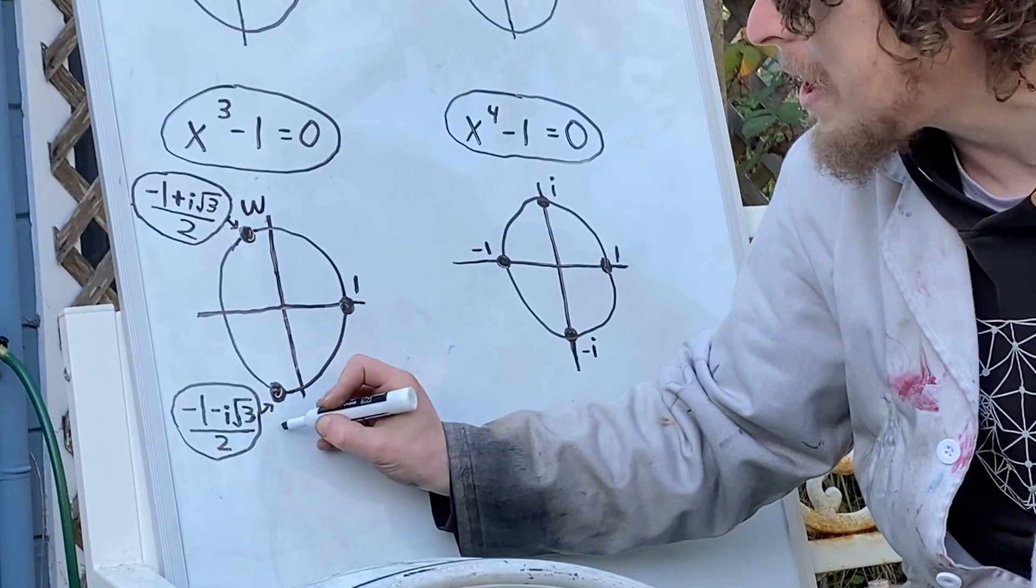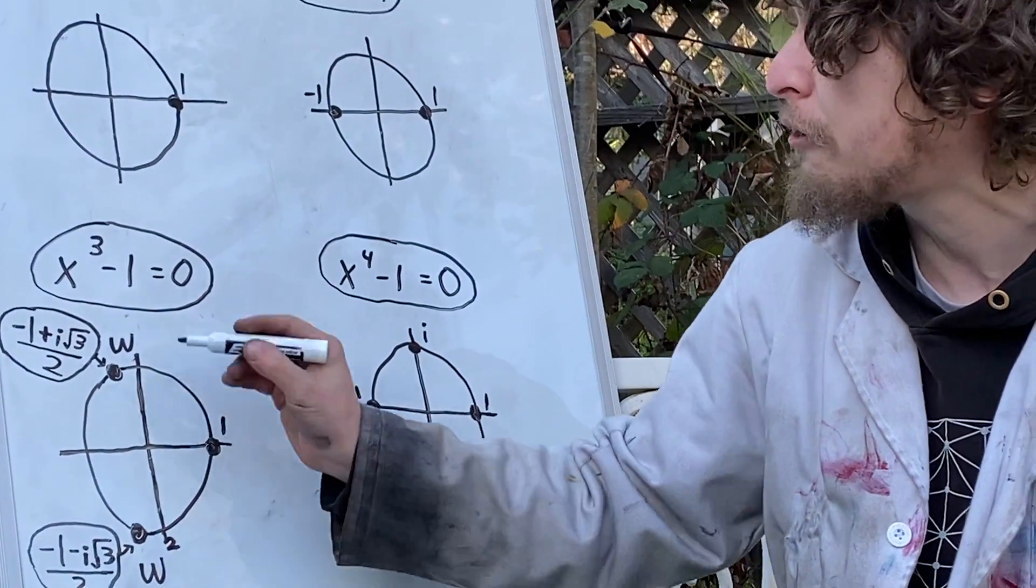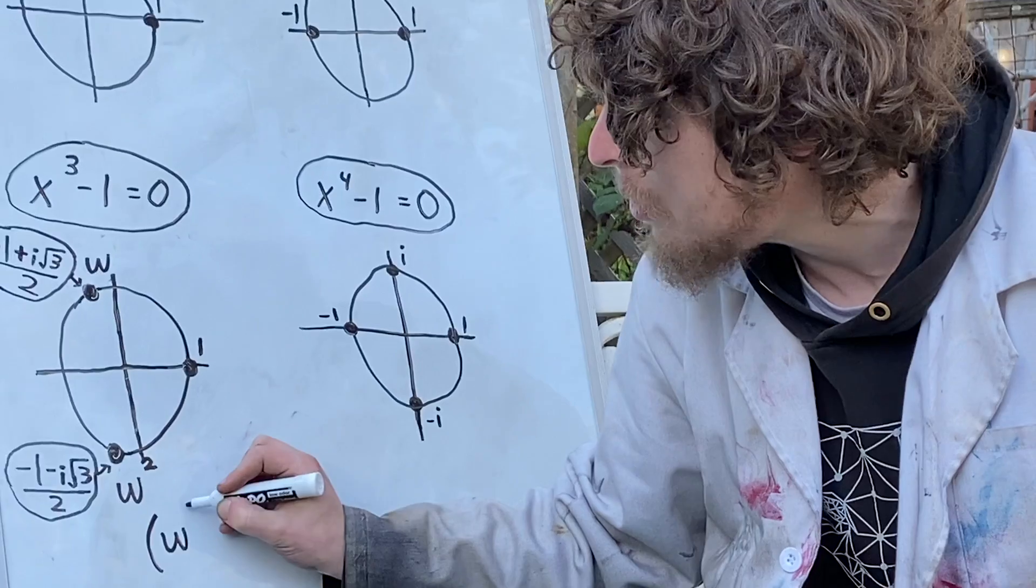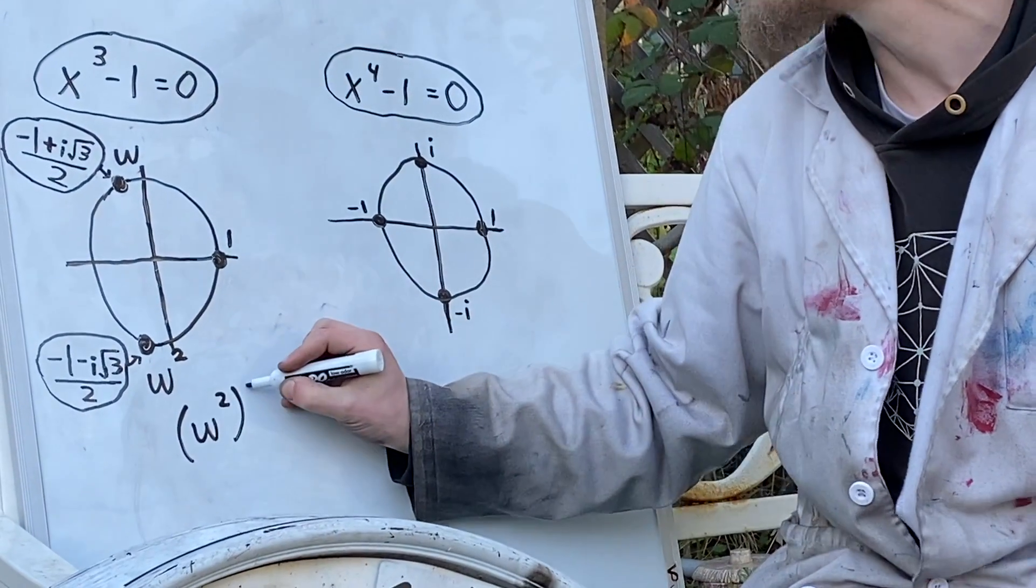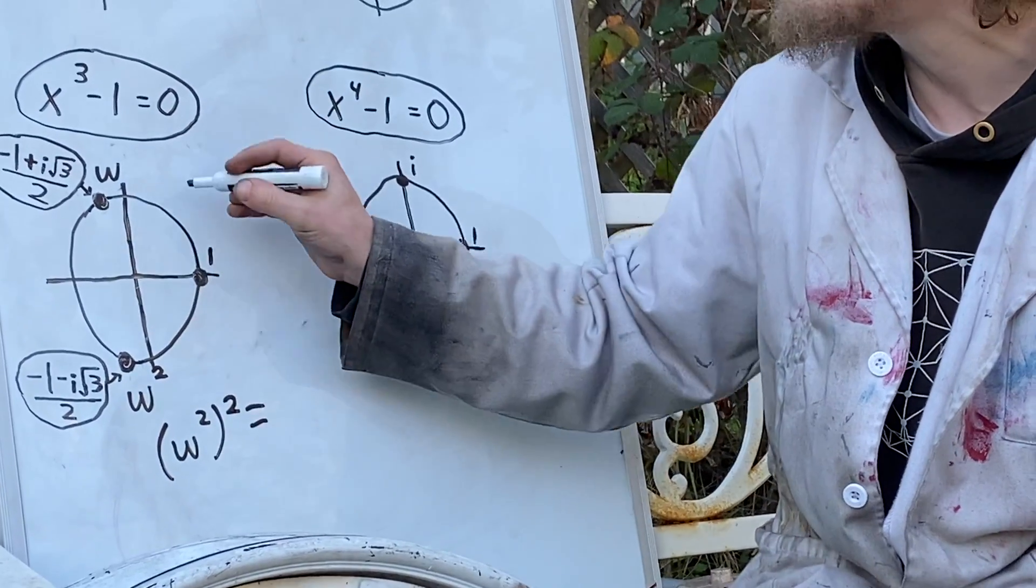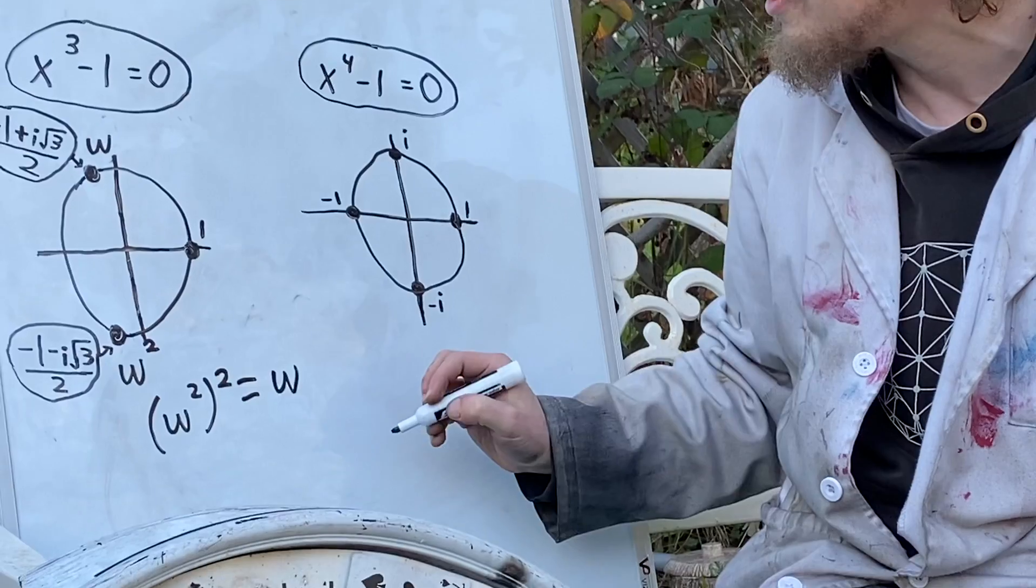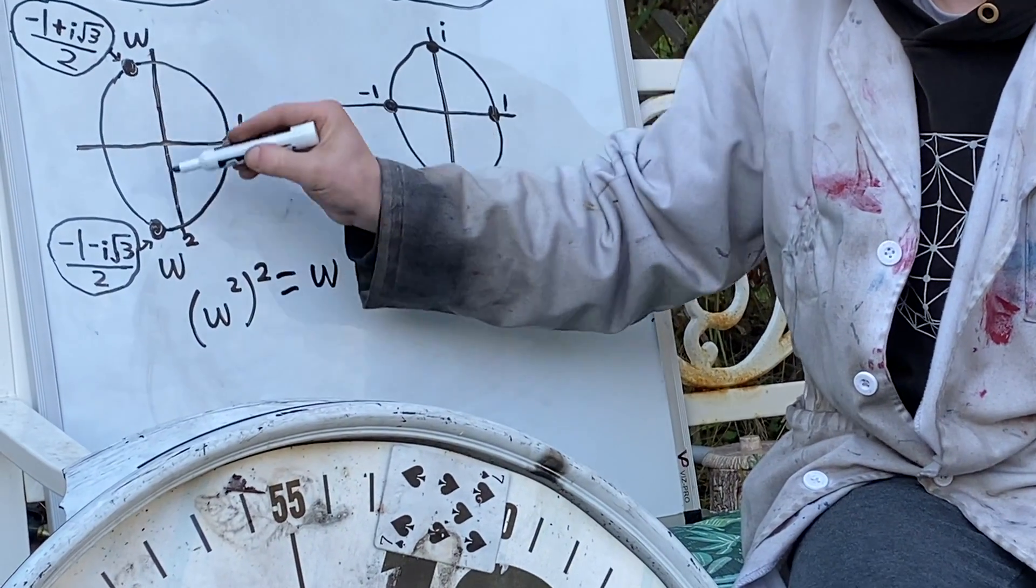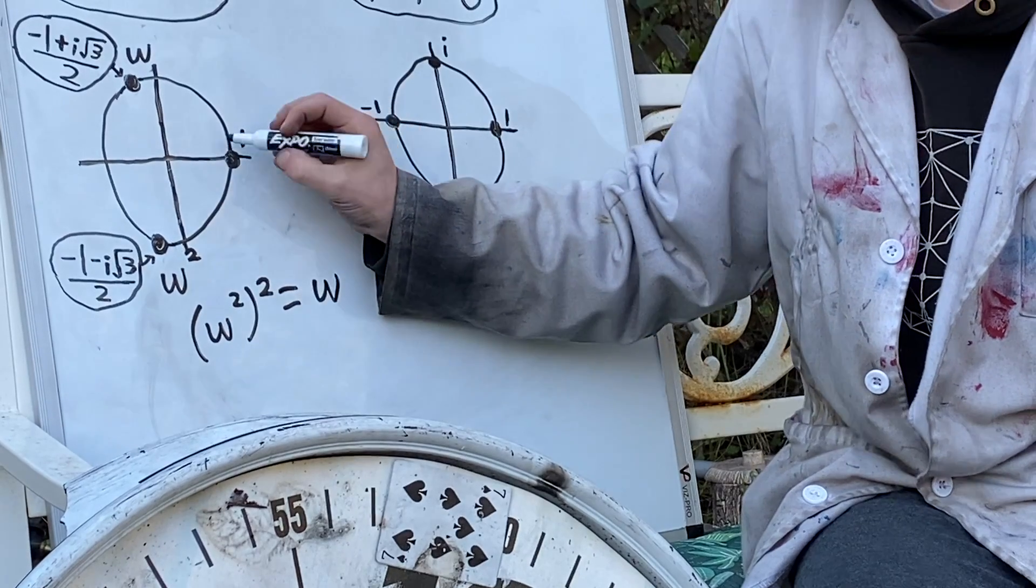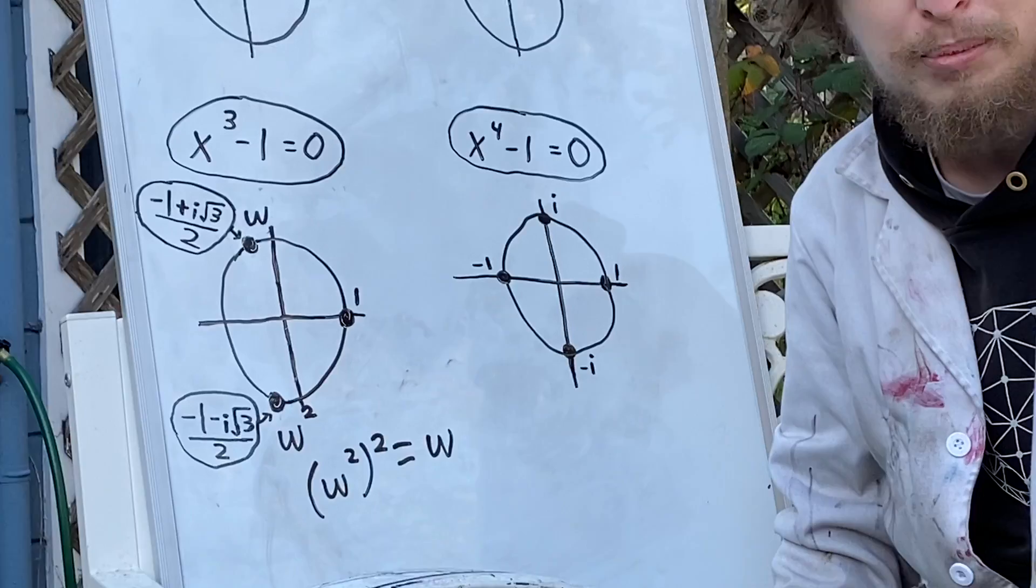And it turns out there's sort of a reverse property that's similar to that, where if we take Omega squared, that point, and square that, it sort of spins it around on this clock-like thing and equals Omega again. So they're both each other's square root, and they're both the cube root of that point. And that's just the start of all their cool properties.